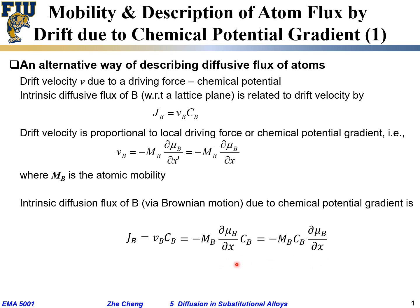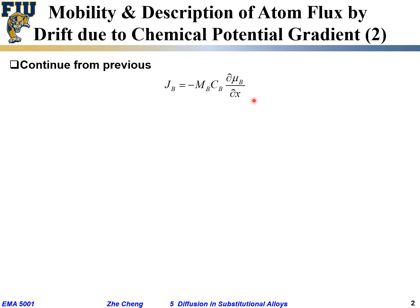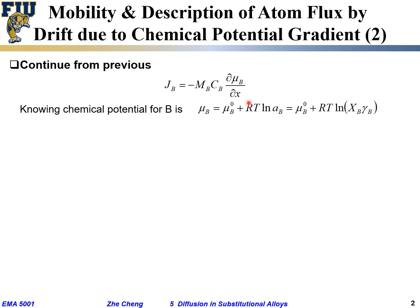We combine mobility and concentration together and leave the chemical potential gradient at the end. Then, if we know the chemical potential for b — as you learn in thermodynamics — the chemical potential for b would be the chemical potential in the standard state (often pure) plus RT times the natural log of activity a, where activity relates to molar fraction.